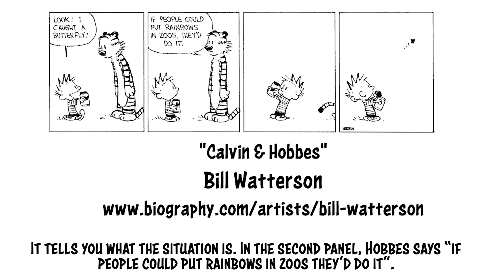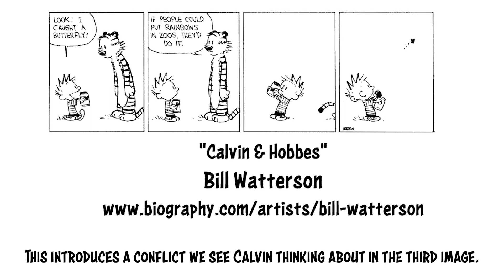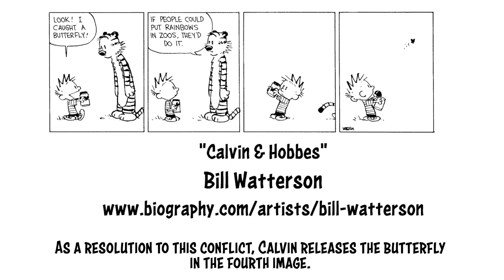In the second panel, Hobbes says, 'If people could put rainbows in zoos, they'd do it.' This introduces a conflict we see Calvin thinking about in the third image. As a resolution to this conflict, Calvin releases the butterfly in the fourth image.